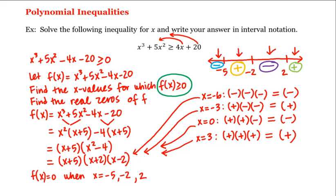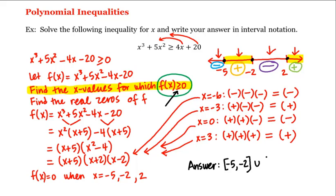We want to find the x values for which f of x is greater than or equal to 0. We found that f is greater than 0 in the second and fourth intervals. But we also have the condition of equality, which means we need to include the values that make f equal to 0 — namely negative 5, negative 2, and positive 2. Our answer is the closed bracket at negative 5 up to negative 2, closed bracket, union closed bracket at 2 up to infinity.